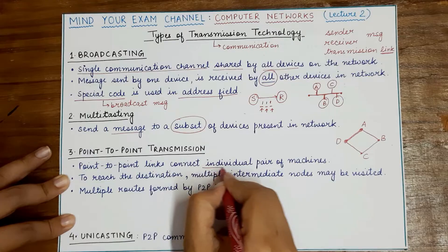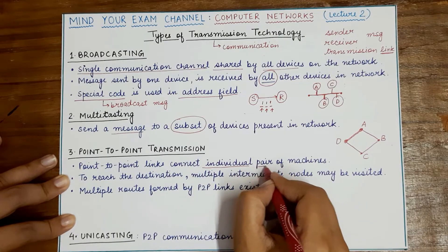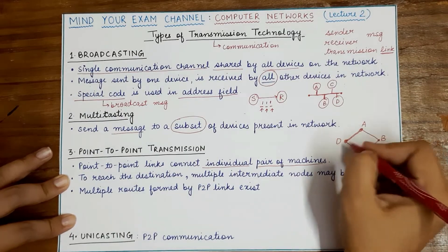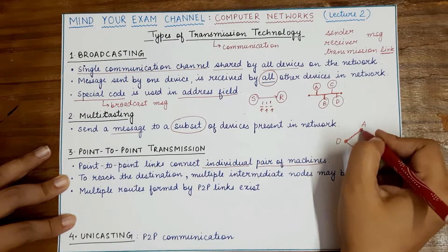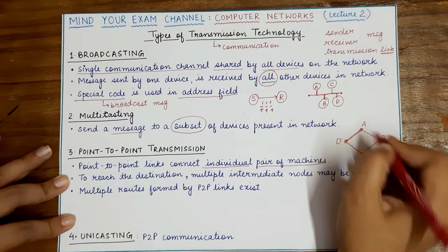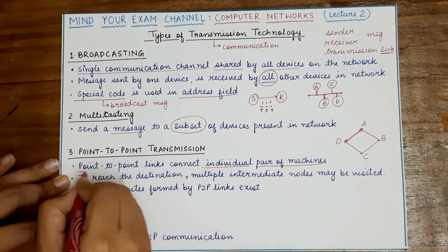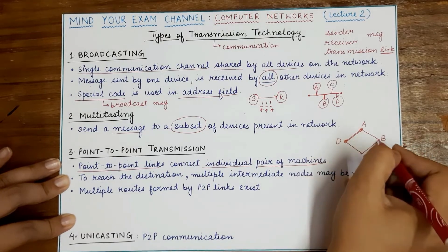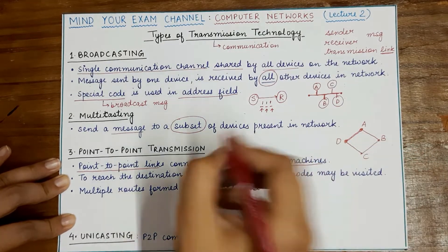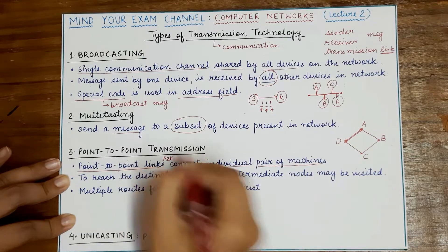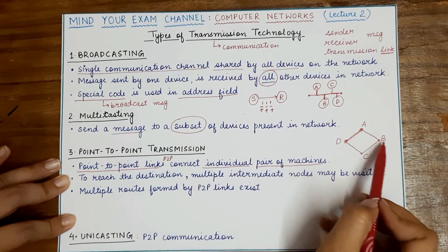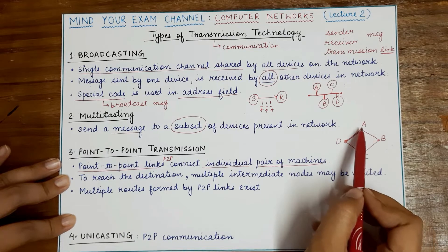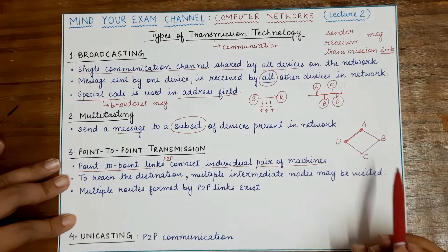Point-to-point links connect pairs of machines — every pair of machines will be connected by one link, one communication channel, known as a point-to-point link. Multiple such point-to-point or P2P links exist between different pairs of machines. If there are four machines in this network, they will be connected via direct links known as P2P links.